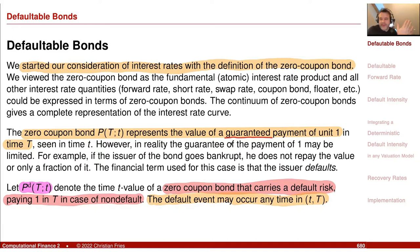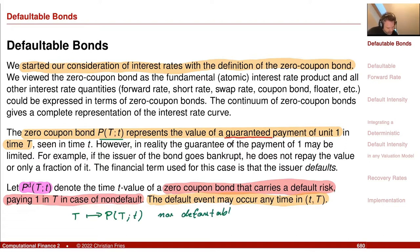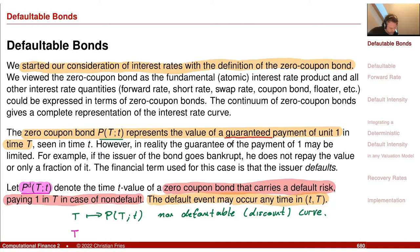We now have two interest rate curves. The non-defaultable curve still exists, but it may be an idealization. We have the non-defaultable discount curve — since we associate zero-coupon bond prices with discount factors — and we now have another curve: the defaultable discount curve.